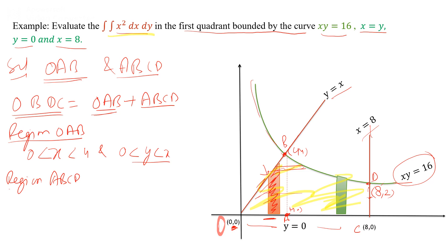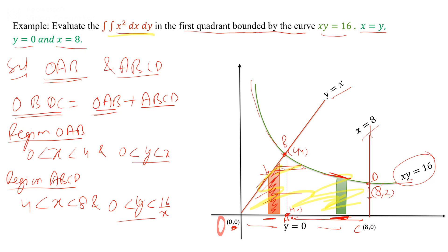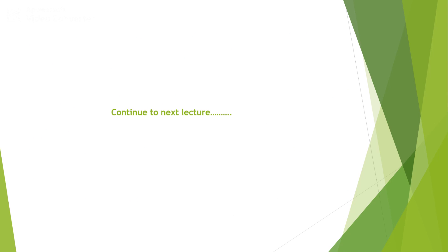For the second region ABCT, x varies from 4 to 8, and y varies from 0 up to the curve xy equal to 16, so y equals 16 by x. In that way you can evaluate the integral by breaking it into two regions: double integration over OAB plus double integration over ABCT. This will be continued in the next lecture.